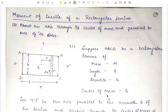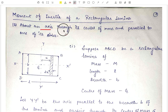Hello everyone. Today we will study the moment of inertia of a rectangular lamina. For that, firstly we have to decide an axis about which we want to find out the moment of inertia. Our first case is to find out the moment of inertia of the rectangular lamina about an axis passing through its center of mass and parallel to one of its sides.